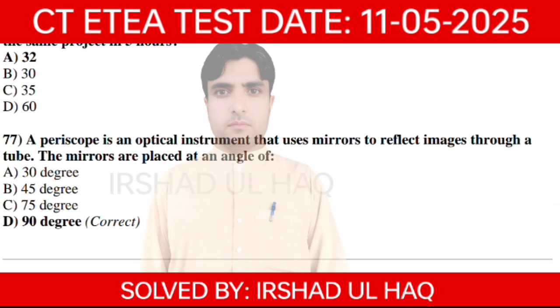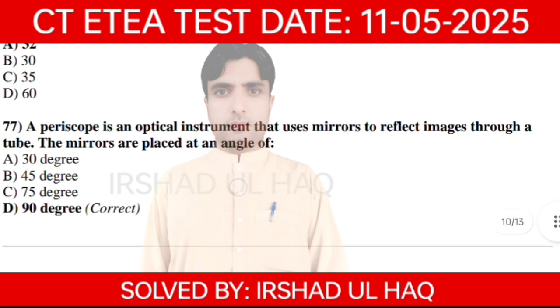A periscope is an optical instrument that uses mirrors to reflect images through a tube. The mirrors are placed at an angle of 90 degrees. Option A: 90 degrees.